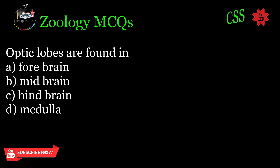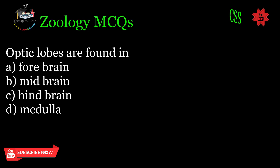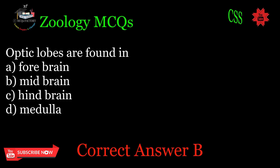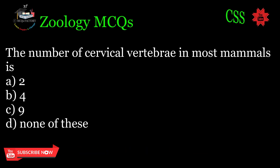Optic lobes are found in: A. Forebrain, B. Midbrain, C. Hindbrain, D. Medulla. Correct answer: B.